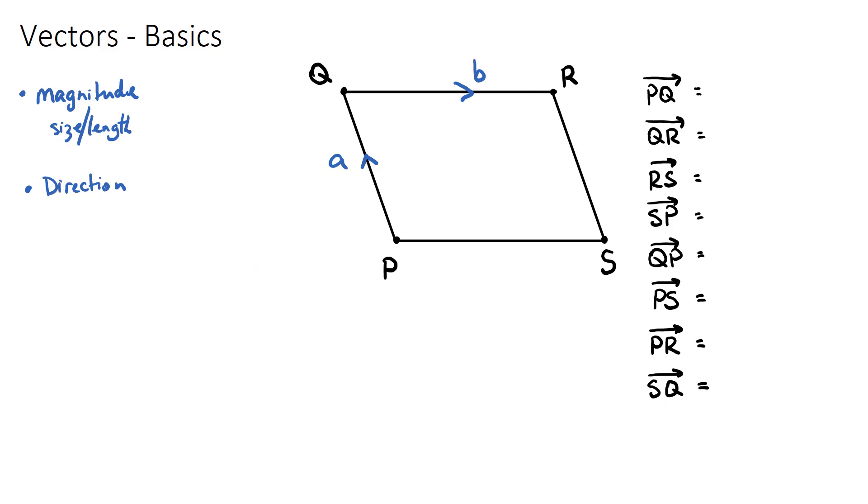In this diagram, the vector a will be from p to q, and that's actually different to the vector that would go from q to p, because it would be the same length but in the opposite direction. It's actually going to be negative a as a vector. And q to r would be the vector b that's defined in this question.